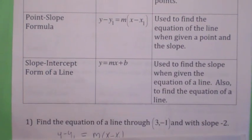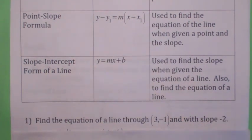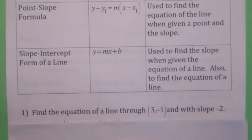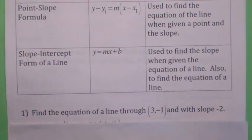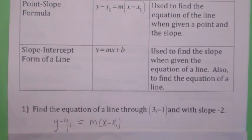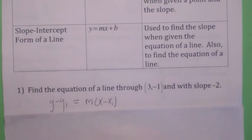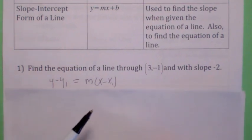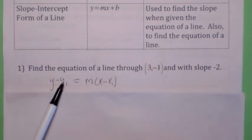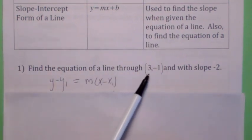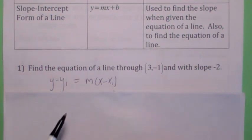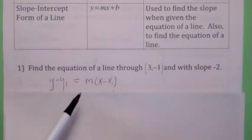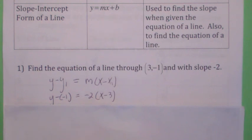If you're given a point and you know the slope, you can find the equation of the line that goes through that point and has that slope. Using the point-slope formula, it amounts to just plugging in the information: you plug the y-coordinate in for y1, the x-coordinate in for x1, and the slope in for m, and you keep y and x the same.